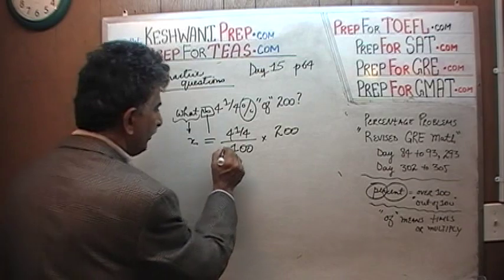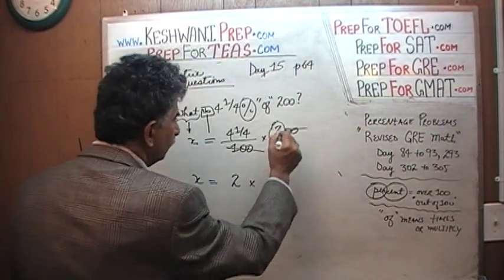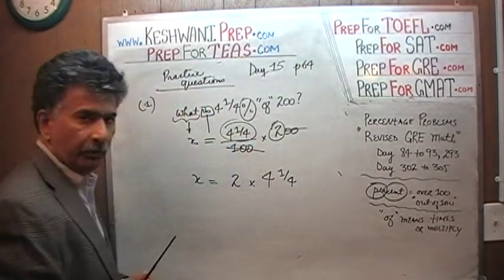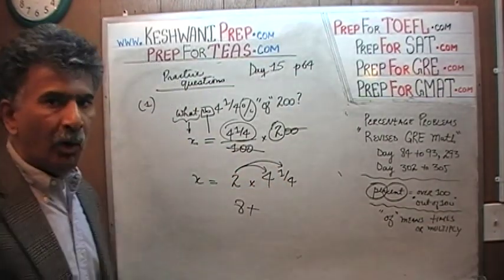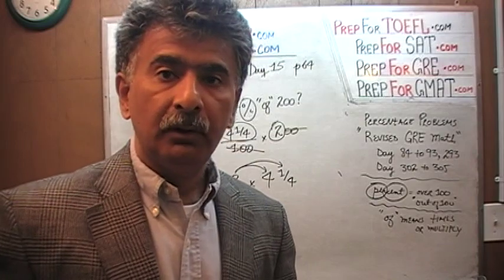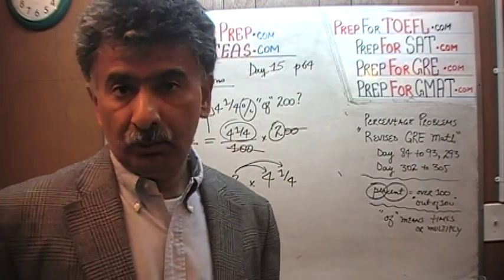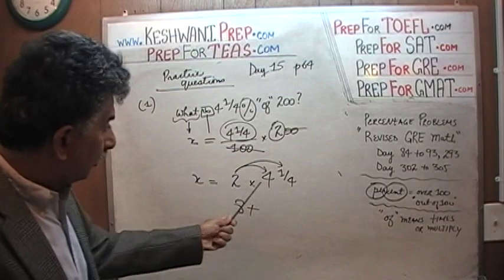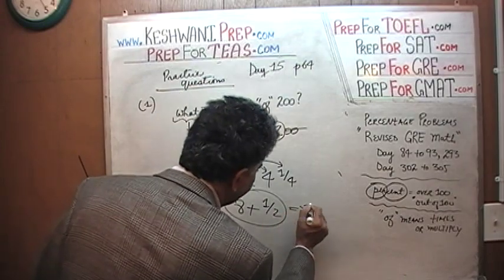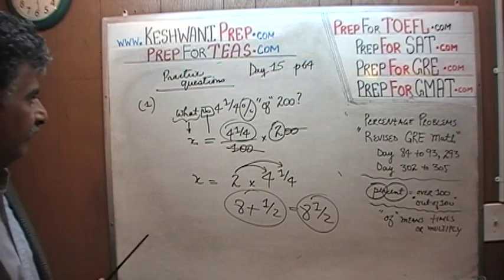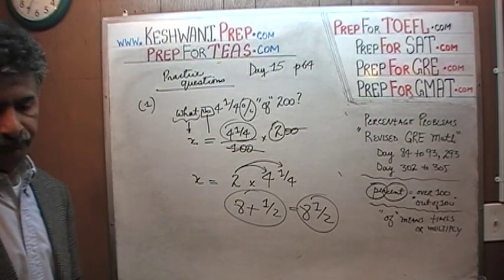Divide top and bottom by 100 — we can knock out the 100s, and they drop out. X, the unknown quantity, is simply 2 times 4 and a quarter. What is 2 times 4? Two times four is eight. And two quarters? If I give you two quarters, you have half a dollar. If you have a quarter of a pizza and I give you another quarter, you have half a pizza. Two quarters make a half. So the answer is eight and a half. The question was: what is 4.25% of 200? The answer is 8.5.